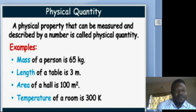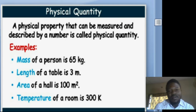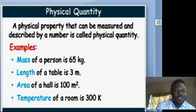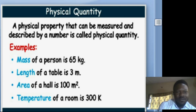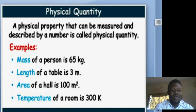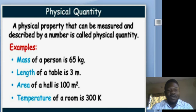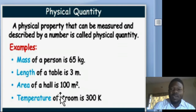For example, 50 kg — the mass of the person is 65 kg, not just 65. The 65 represents the quantity while the kg represents the unit of measurement. Similarly, the length of the table is 3 meters — you have to assign units to any physical property or quantity you have measured.